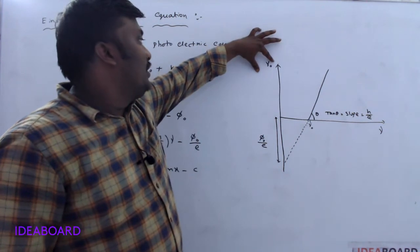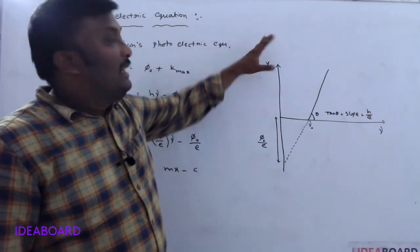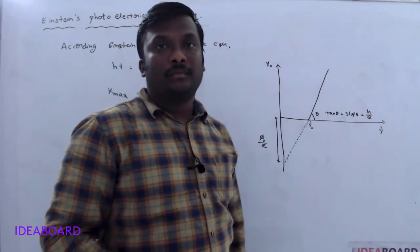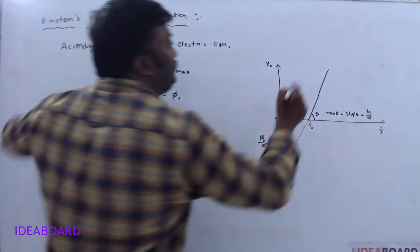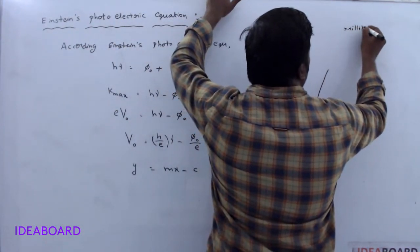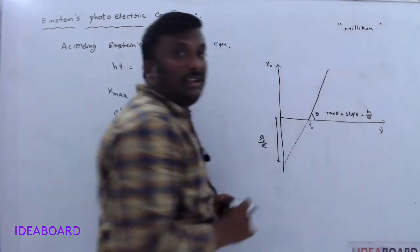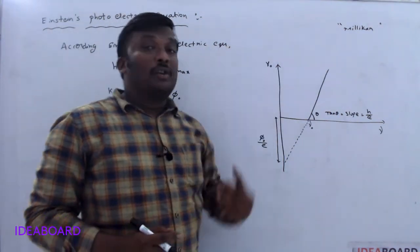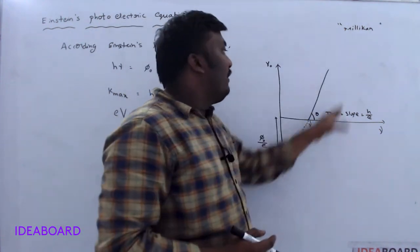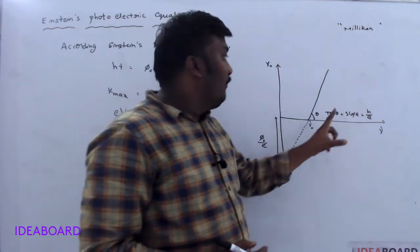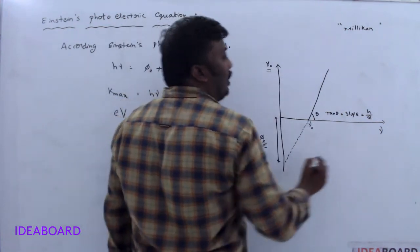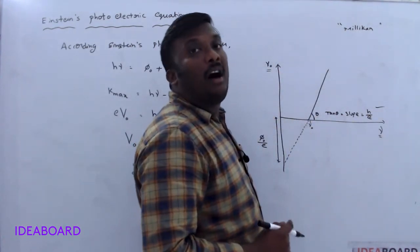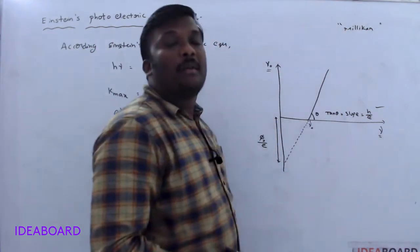Instead of stopping potential, if you take kinetic energy, the kinetic energy and frequency also produce a graph in this manner. Millikan is another scientist who proved that Einstein's photoelectric equation is correct. He performed a huge number of experiments on different metals and found that for every metal, the graph drawn between stopping potential and frequency gives the same slope, equal to h/e.